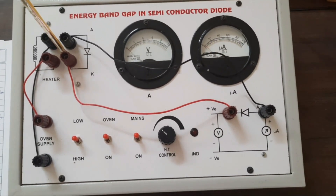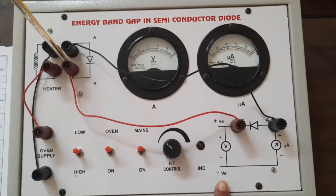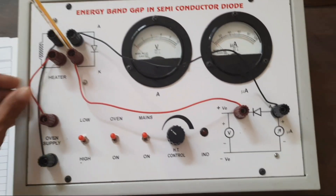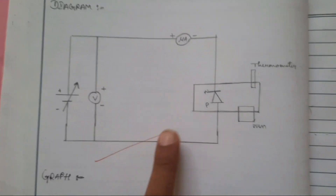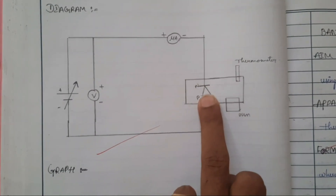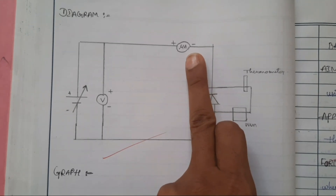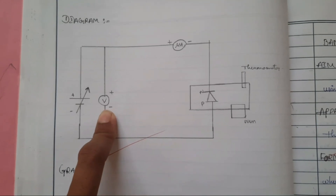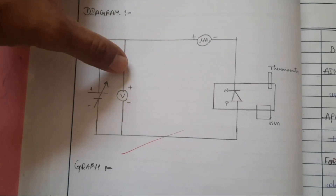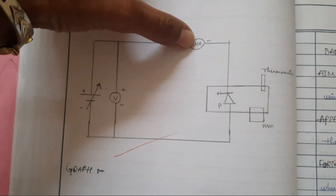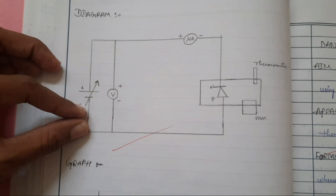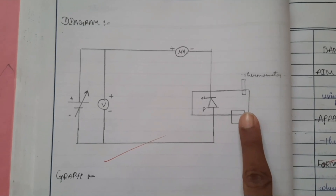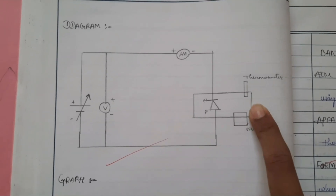We have to make the connections according to the circuit diagram, but here in the setup the connections have already been made. In the circuit diagram, the negative terminal of the PN junction diode must be connected to one end of the ammeter's negative terminal, and the positive terminal must be connected to the negative terminal of the voltmeter. There is a common connection between the voltmeter and ammeter, and the voltmeter must be connected to the power supply.